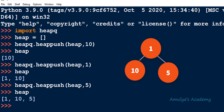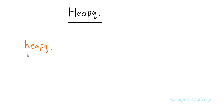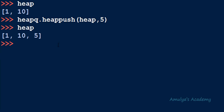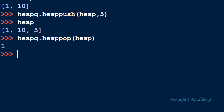Next let's talk about the heappop function. This function also belongs to the heap queue module, so the syntax is heapq.heappop and the parameter is the heap name or list name. This function will return the smallest value and also delete it from the heap, maintaining the binary heap property. After deleting the root node it will maintain the heap property. Here we have [1, 10, 5] — let's use heapq.heappop: 1 is removed, returning the minimum value and deleting it from the list.